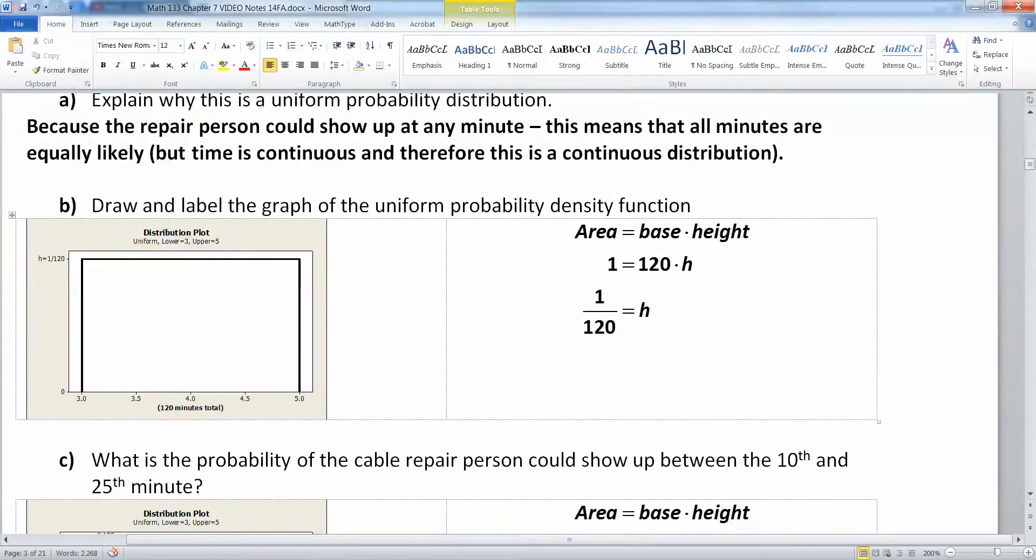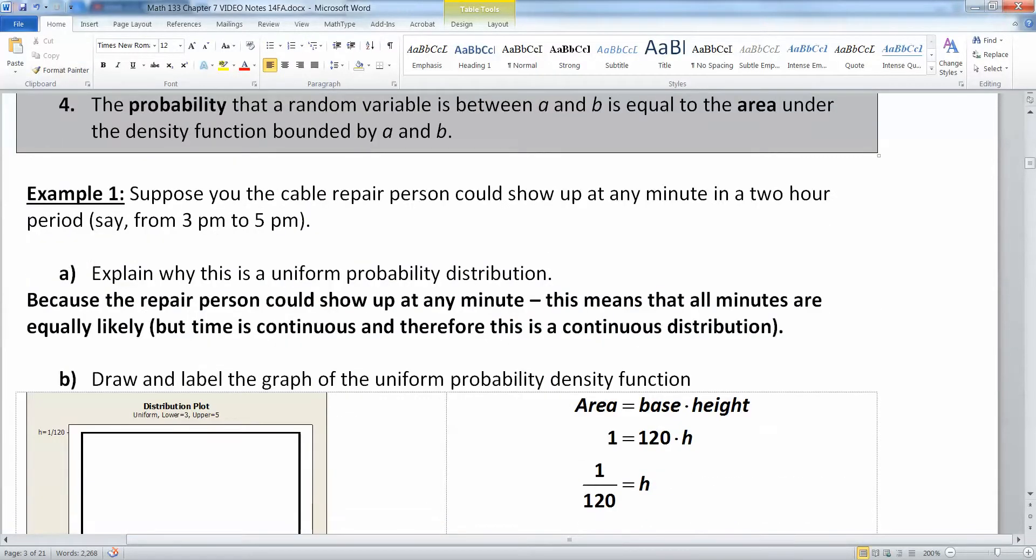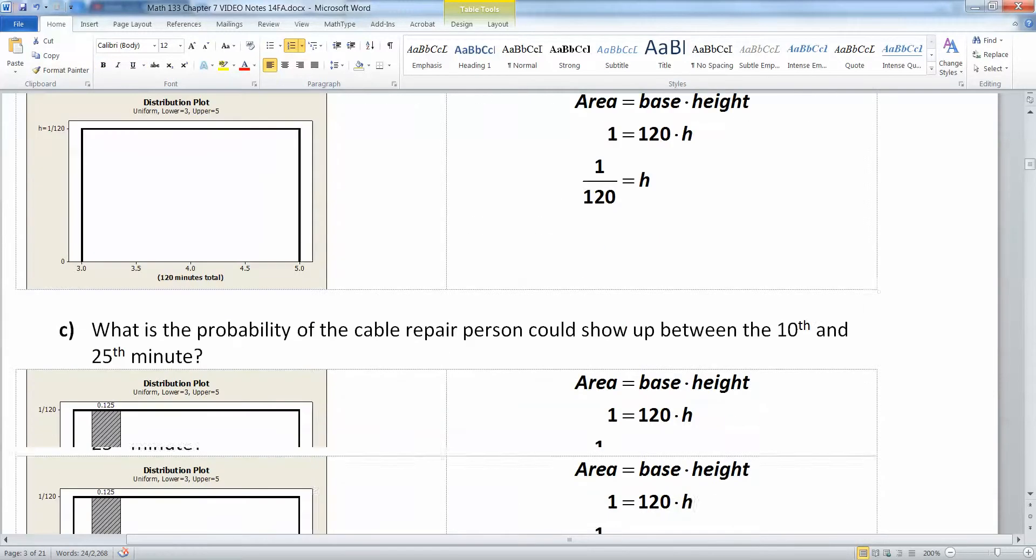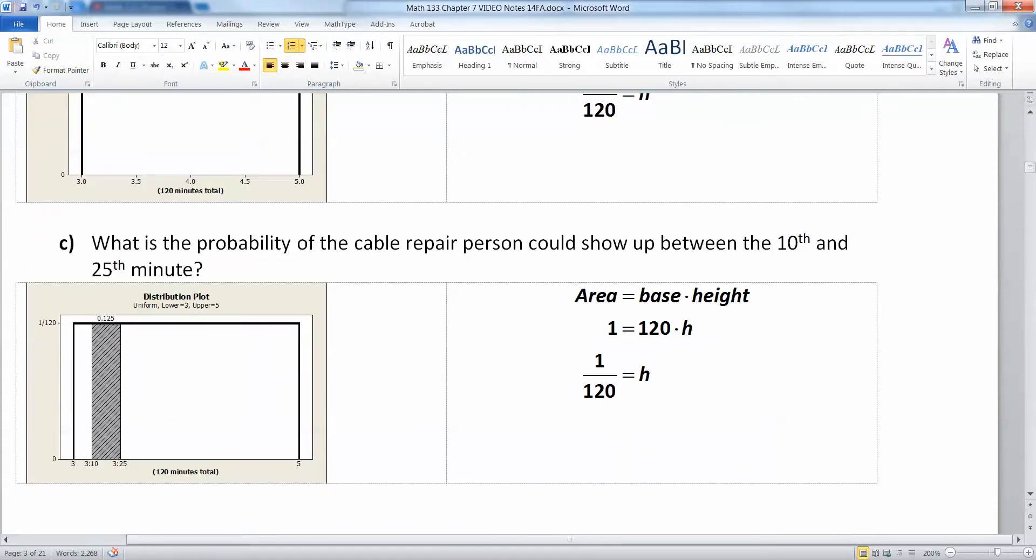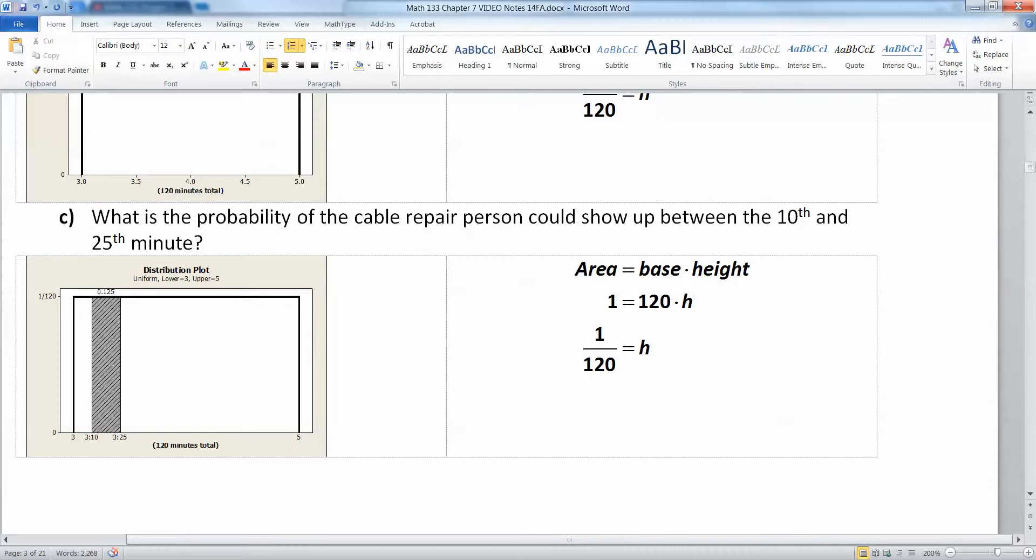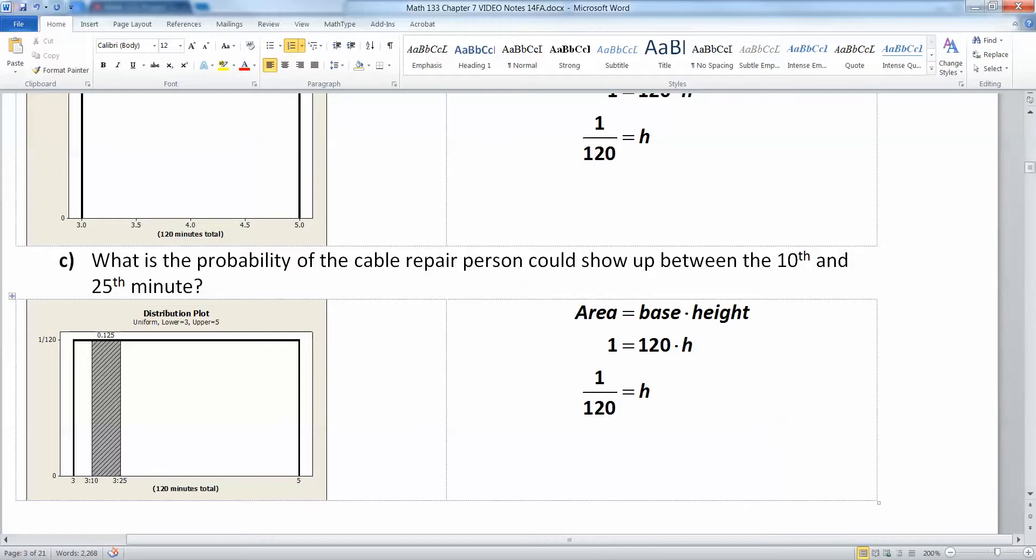Now the shading part is getting at the whole probability that a random variable between A and B equals the area under the density function bounded by A and B. What is the probability that the cable repair person shows up between the 10th and 25th minute? You take 3:10, that's the 10th minute, 3:25, that's the 25th minute, and you shade the area in between. That area in between is your probability. You just have to figure it out.